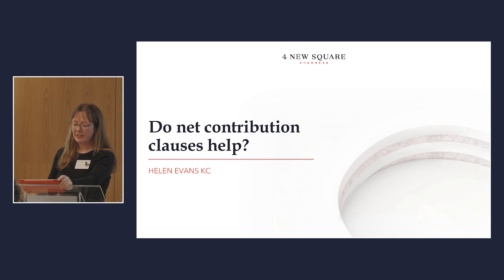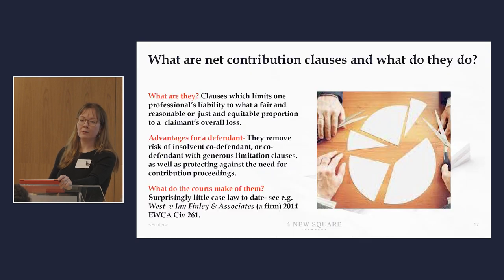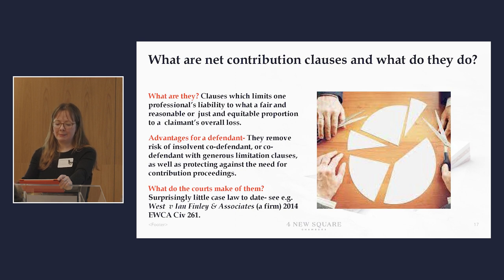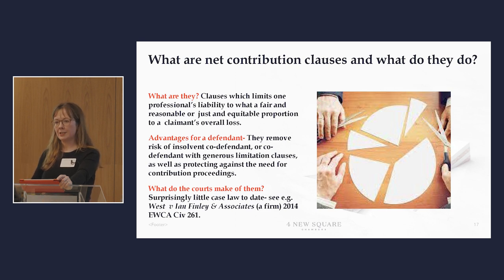So, net contribution clauses. These are also known as proportionate liability clauses, and what they set out to do is to limit a professional person's liability to a fair and reasonable or a just and equitable proportion of a claimant's overall loss. You may be wondering what's the point given that we've got the Civil Liability (Contribution) Act which does the same thing. Well the point is that they aim to reverse the starting point of joint and several liability, and they put the risk of one defendant going bust, being underinsured, or having a stringent liability clause they've managed to defend — on the claimant rather than on the co-defendants. It's quite rare that professionals get any say in the terms on which their co-professionals are advising, and you often get multi-disciplinary pieces of work — share purchase agreements or construction projects — where people can find themselves at the mercy of other people's limitation clauses.